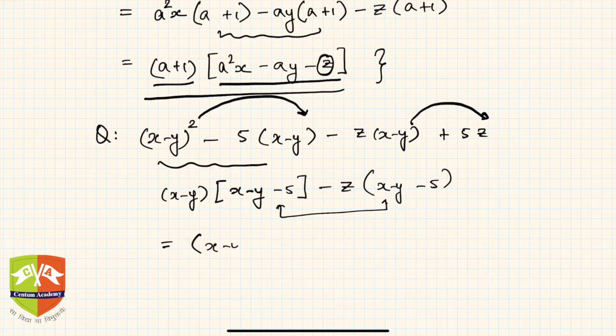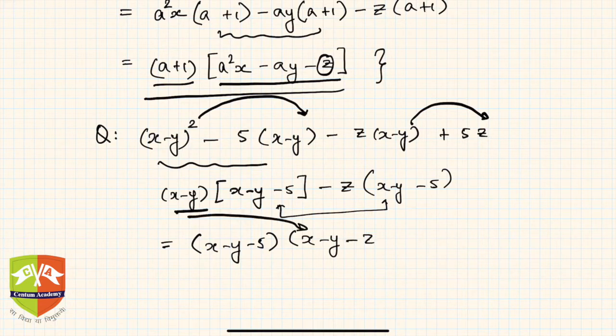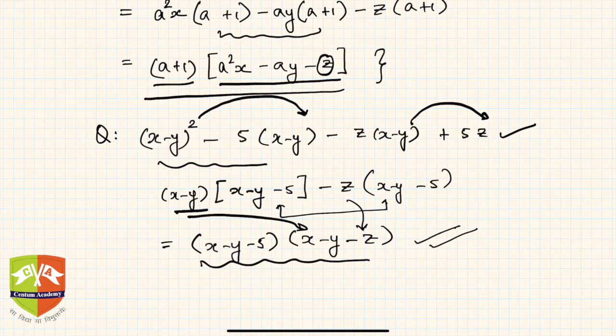Hence I can write this as (x-y-5) times (x-y-z). Now you see the polynomial is reduced to its factors. How do I know it is a factor? Because there are two brackets and it's a multiplication of two expressions.